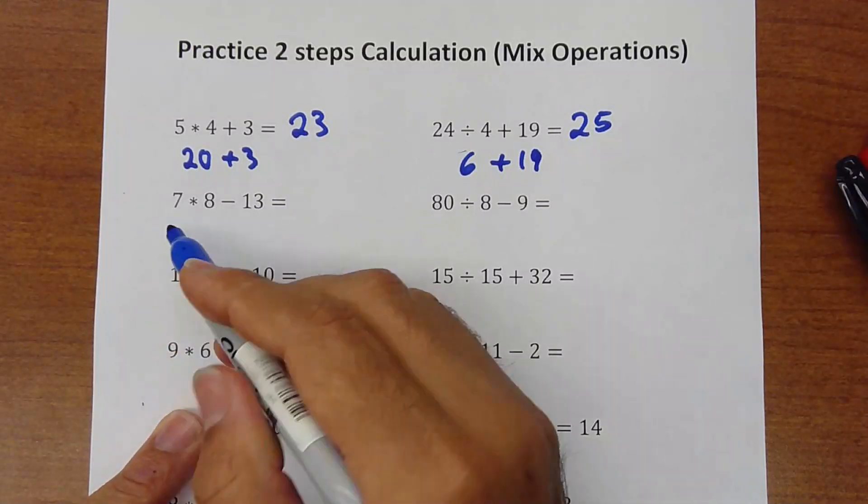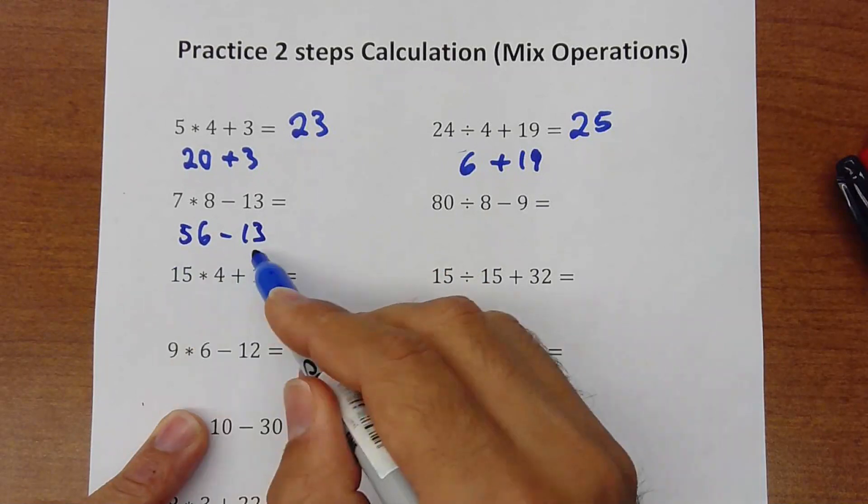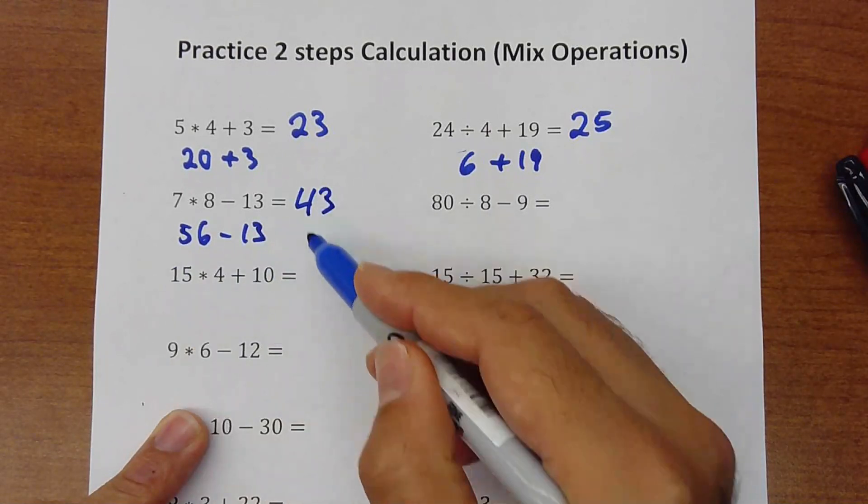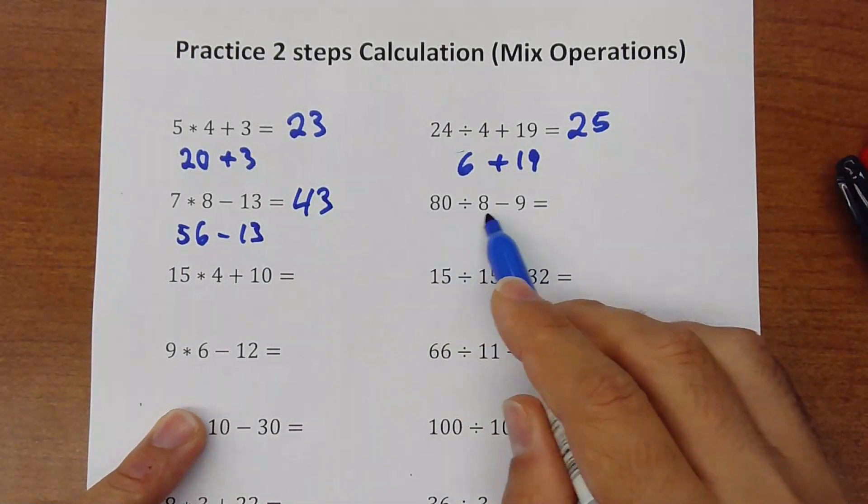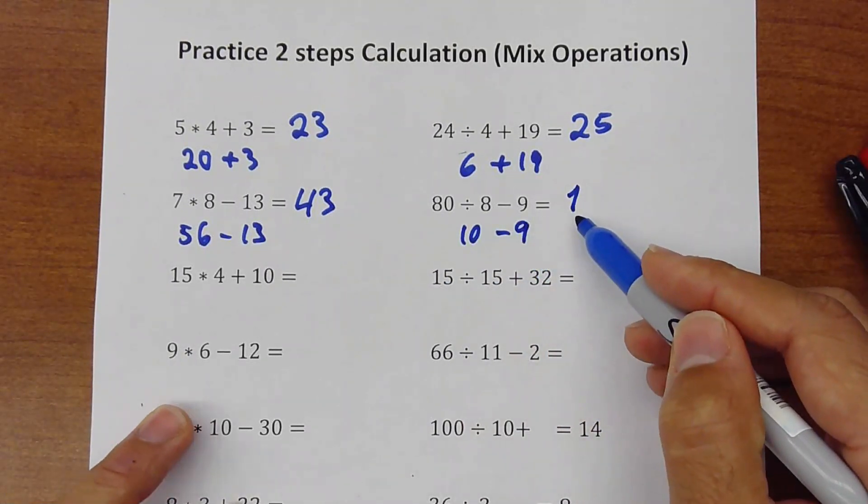7 times 8 is 56 minus 13. Okay, that will be 43. Then we have 80 divided by 8 is 10, and 10 minus 9 is equal to 1.